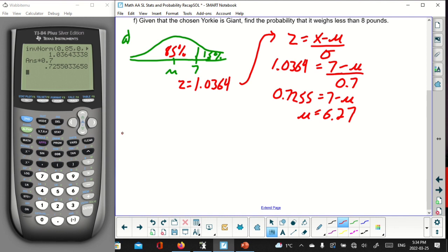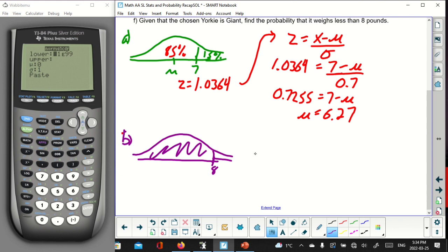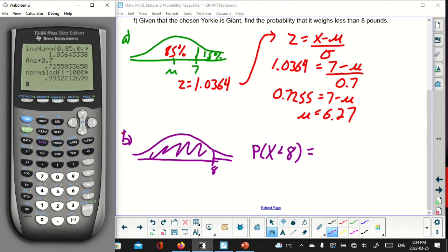Now, it asks us, what's the probability that a randomly selected Yorkie weighs less than 8 pounds? Let's see. I'm going to draw the distribution. 8 pounds is pretty hefty for a Yorkie. I want to find this probability or area. So that's a job for normal CDF. Really this is the probability that x is less than 8. The lower bound I could make it 0, but I'm going to make it negative a bajillion. The upper bound is 8. The mean we just found is 6.27, and the standard deviation is 0.7. So now we're talking about actual real scores, not z-scores. I hit enter, I get 0.993 to three sig figs.